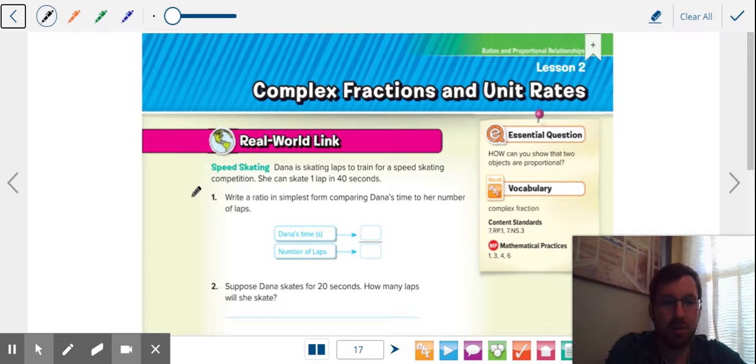We're going to be looking at complex fractions and how they apply to unit rates. So last lesson we talked about unit rates or rates. How do you find a rate between two things? You take the first unit divided by the second unit. Just make sure you have the units lined up right.